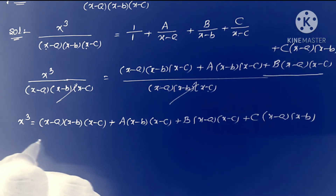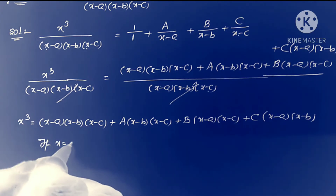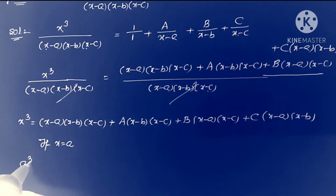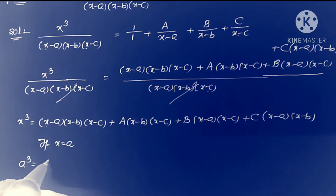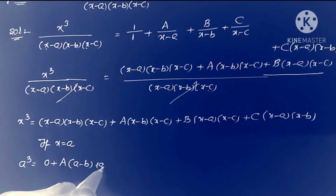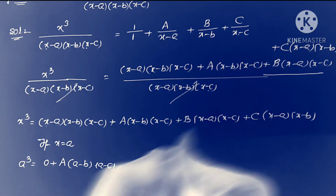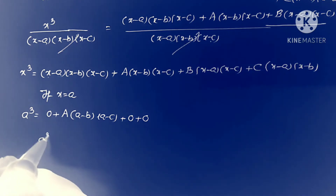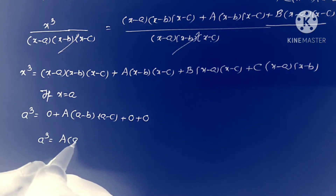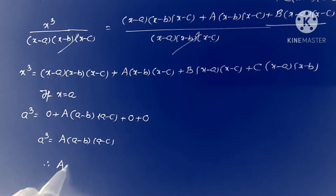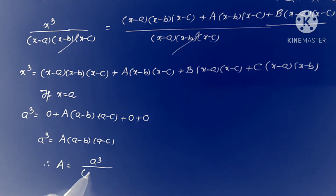Now substituting x = a: (x-a) becomes 0, so a³ = A·(a-b)(a-c), since the B and C terms vanish. Therefore the value of capital A equals a³ / [(a-b)(a-c)].